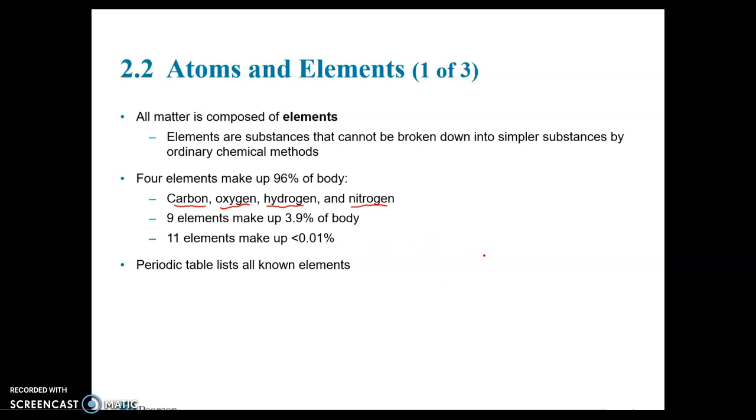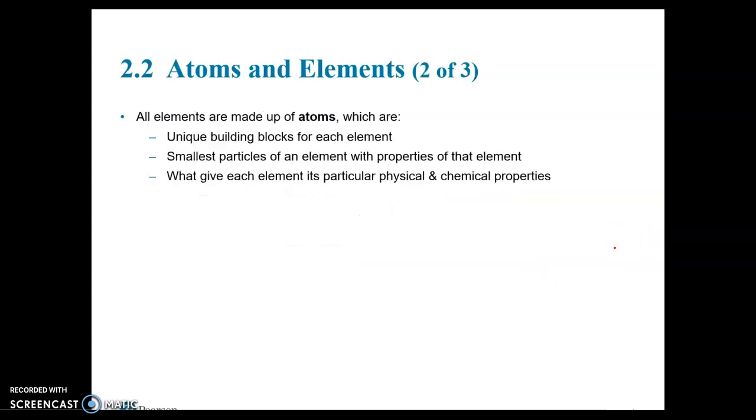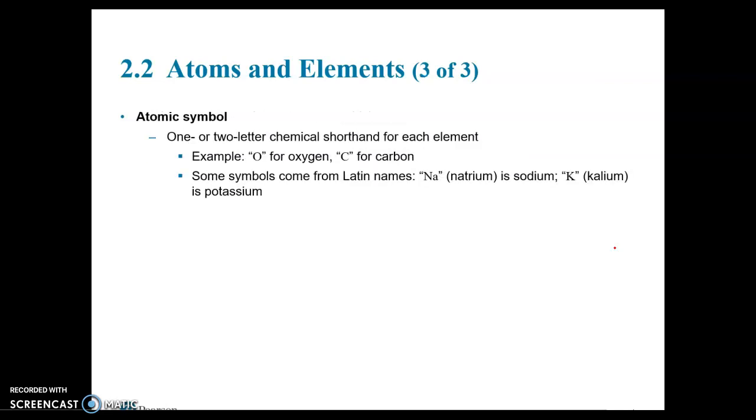And there are nine elements that make up 3.9 percent of the body and 11 that make up less than 0.01 percent. I will say that you may also want to know sulfur, which is S, and phosphorus, which is P. And if it shows a periodic table, I'll highlight all of those.